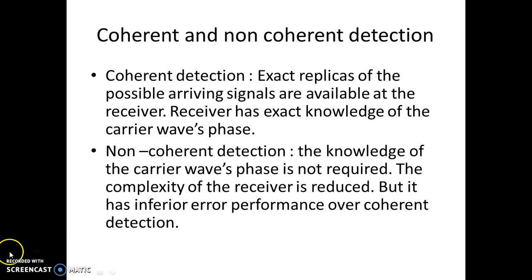Coherent and non-coherent detection. In coherent detection, exact replicas of the possible arriving signals are available at the receiver, which means the receiver has exact knowledge of the carrier wave's phase. The receiver knows the phase of the incoming signal — it can be a zero degree phase or some other phase, but the receiver knows exactly what the phase of the incoming signal is. That is coherent detection.